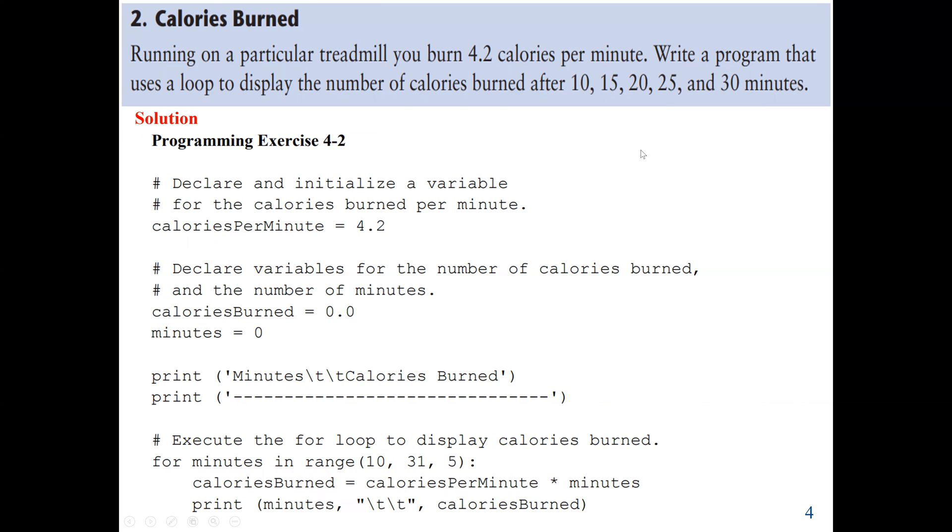In the lectures, we always use the loops or repetition control structures if we have to do something multiple times and the same thing multiple times. So let's start with the solution. Here, the first thing we're going to declare and initialize a variable for the calories burned per minute. And here, the question said the calories burned per minute is 4.2. So the variable name is calories per minute. We assign 4.2 to it.